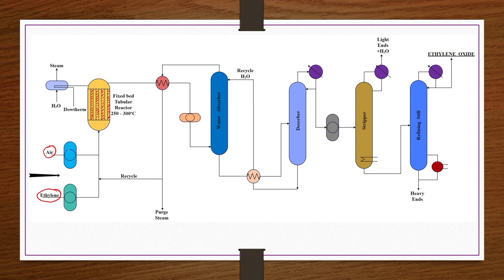The product mixture containing ethylene oxide along with unreacted ethylene and air exits the reactor and passes through a waste heat boiler to recover energy. Unreacted gases are separated and recycled back to the reactor or removed as a purge stream to prevent accumulation. The product mixture is then compressed and passed through a water wash absorber.